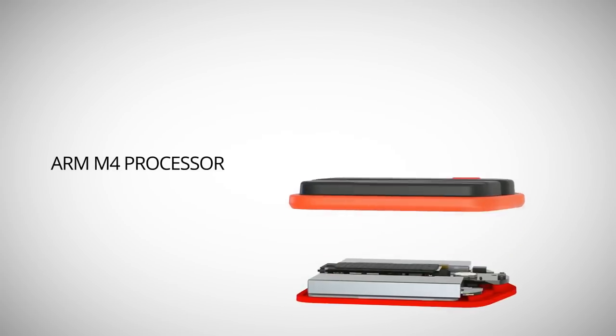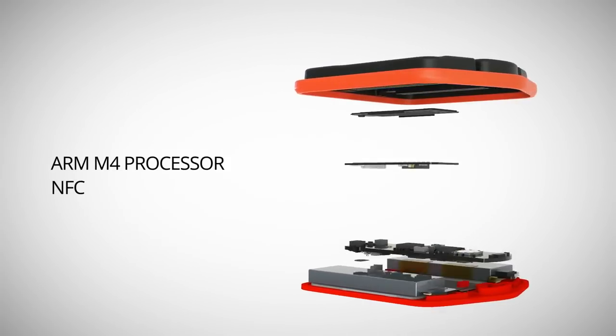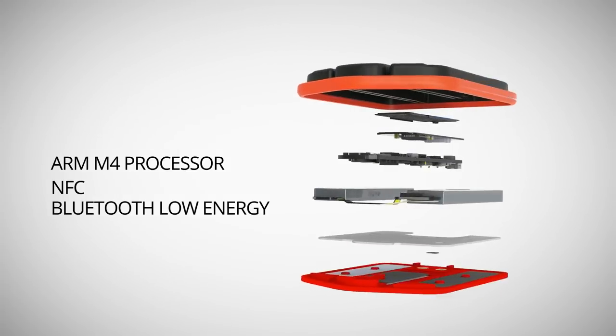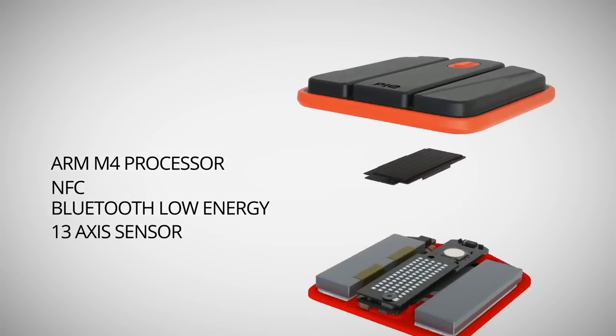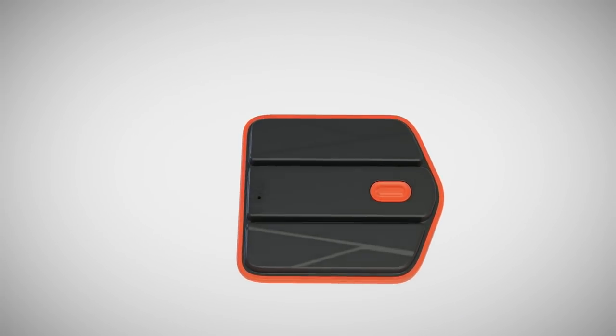Peak has an M4 processor, NFC, Bluetooth, but most importantly it's got a 13-axis sensor. This allows us to track tons of information depending on what sport you're playing.